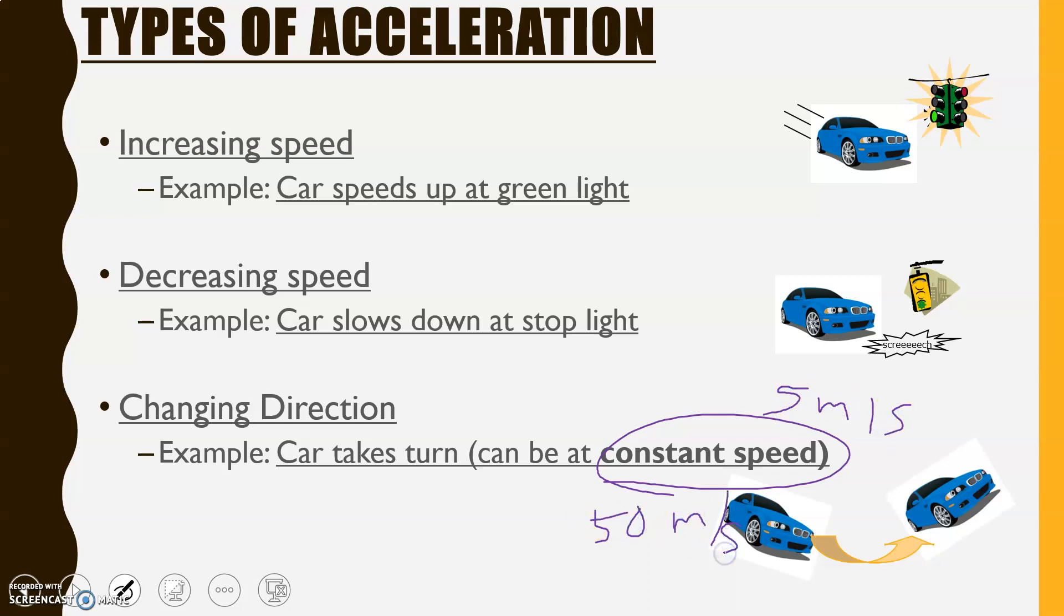Of course, it's not smart to change directions while maintaining the same constant speed. Usually, most people slow down to change direction, but it can be done. So just remember, even if something is traveling at a constant 20 meters per second, but it's changing direction, that's still acceleration because the direction is changing.